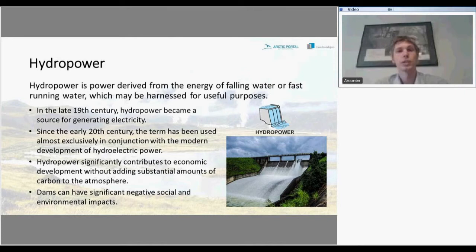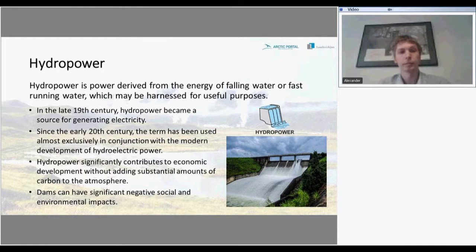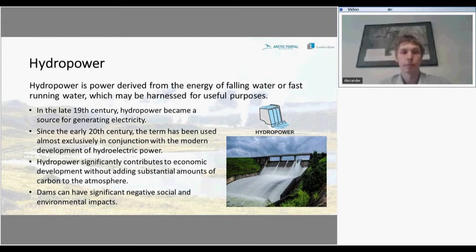The next energy source is hydropower. Hydropower is derived from the energy of falling water or fast-running water, which may be harnessed for useful purposes. It was used in the 19th century when it became a source for generating electricity, and since the early 20th century it has been considered almost exclusively in conjunction with modern development of hydroelectric power. Hydroelectric power significantly contributes to economic development and is relatively clean — it doesn't add a considerable amount of CO2 to the atmosphere. But dams can have significant negative social and environmental impacts.